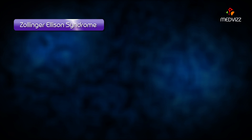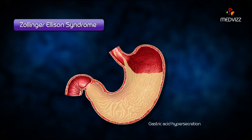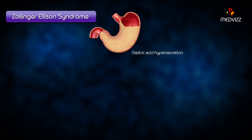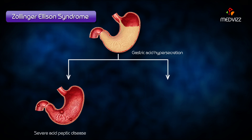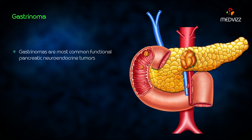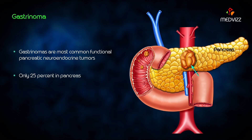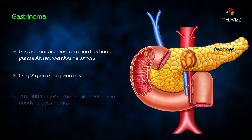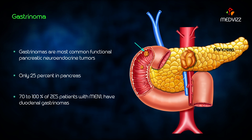Zollinger-Ellison syndrome is characterized by gastric acid hypersecretion resulting in severe acid-related peptic disease as well as diarrhea. Although gastrinomas are one of the most common functional pancreatic neuroendocrine tumors, only 25% of gastrinomas arise from the pancreas, but 70 to 100% of patients with Zollinger-Ellison syndrome with MEN-1 syndrome have duodenal gastrinomas.